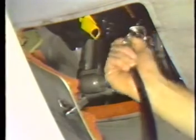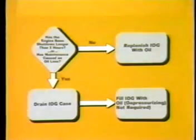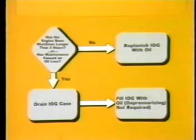Remove the drain line and install the dust caps on both the overflow drain and pressure fill valves. This completes the oil replenishment procedures for an IDG which has a low oil level.